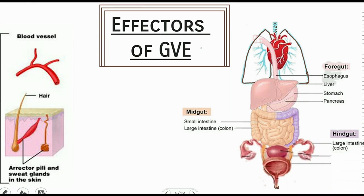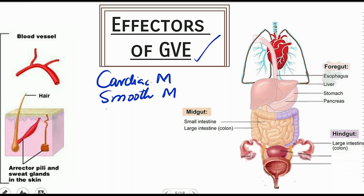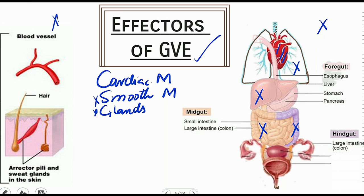Before going further, you should be clear about the effectors of the general visceral efferent component. These effectors are the involuntary effectors that include cardiac muscle, smooth muscle, and glands. Cardiac muscle is present in the thorax, in our heart, while smooth muscle and glands are present inside the body as well as outside the body. Inside the body, in the thorax we have the lungs; in the abdomen we have the digestive tract — the foregut, midgut, and hindgut. In the pelvis we have the urinary bladder, the uterus, and glands.